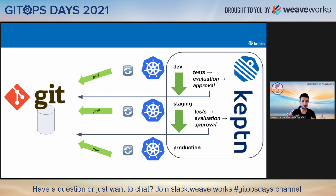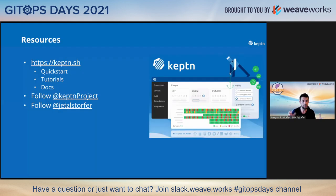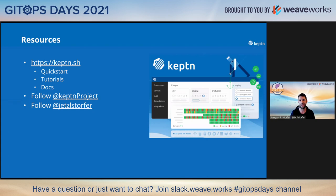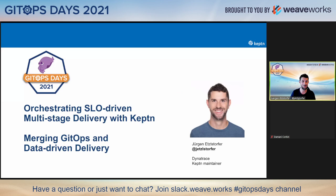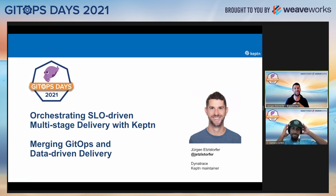We can combine the whole GitOps approach — pulling all configuration stored and versioned in Git and applying it to your Kubernetes cluster — with orchestrating tests, evaluations, and the full lifecycle of your applications using Keptn. If you're interested, I've put links here — Keptn is an open source CNCF project with quickstarts and tutorials, and we always have exciting news for new releases. I also tweet about the Keptn project and all things around GitOps and automation. Thanks a lot for having me here.